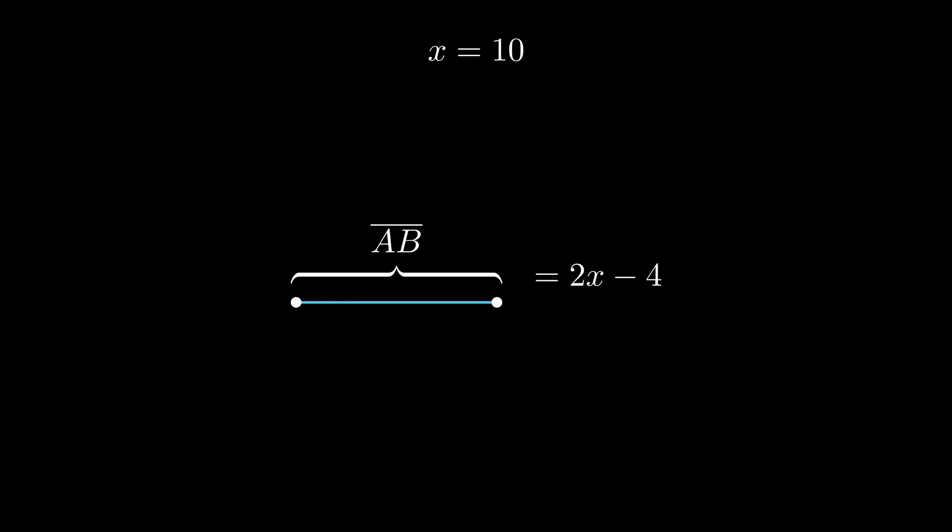Now we just plug in 10 for x to get the equation AB equals 2 times 10 minus 4. Multiply 10 by 2 to get 20 and subtract by 4 to get the length of 16 for line segment AB.